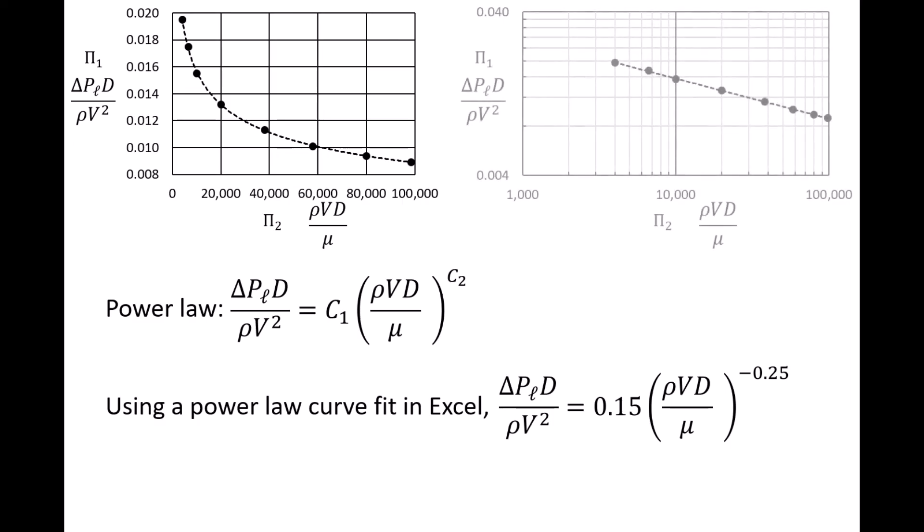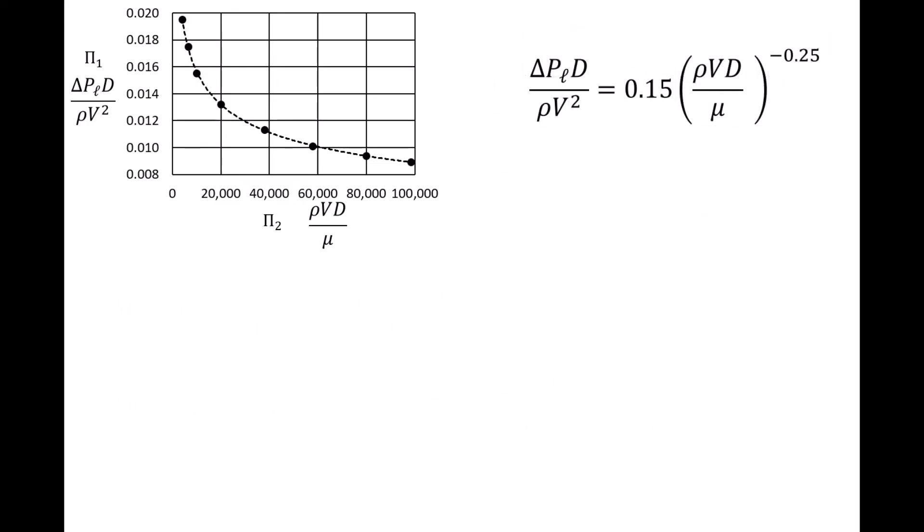One way to test whether the power-law may provide a good fit to the data is by plotting the data on a log-log plot. The data points should appear as a straight line on a log-log plot if the power-law describes the relationship between the pi terms well. So, we've now found an acceptable expression for the function phi.